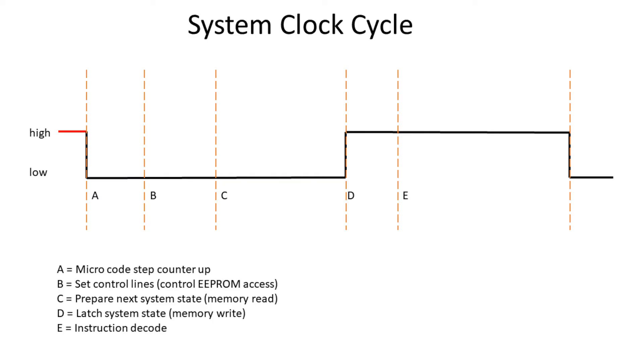If one takes a closer look at the system clock cycle, you can see that the high and the low state divide into different phases. Whereas the low part divides into the microstep counter up, that is the part when the step counter is counting up. And then the second part that is when the control lines are set by the EEPROM. So that is when the EEPROM access has finished and the control lines are set. And then the third state is when the system prepares for the next state. That is when the addition is done by the ALU or when the memory access in RAM has been done.